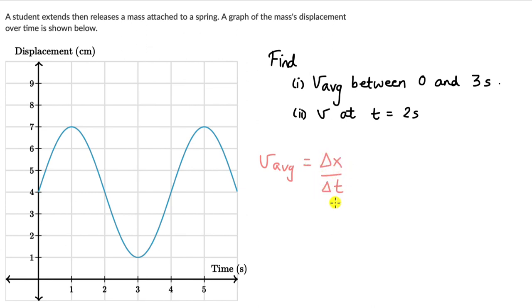This is the change in position divided by the time interval. We know the time interval is between 0 and 3, so this is 3 minus 0. And Δx would be the position of the mass at time 3 seconds, which we can see is plus 1 centimeter. So that's 1 minus the position of the mass at time 0, and that is 4 centimeters.